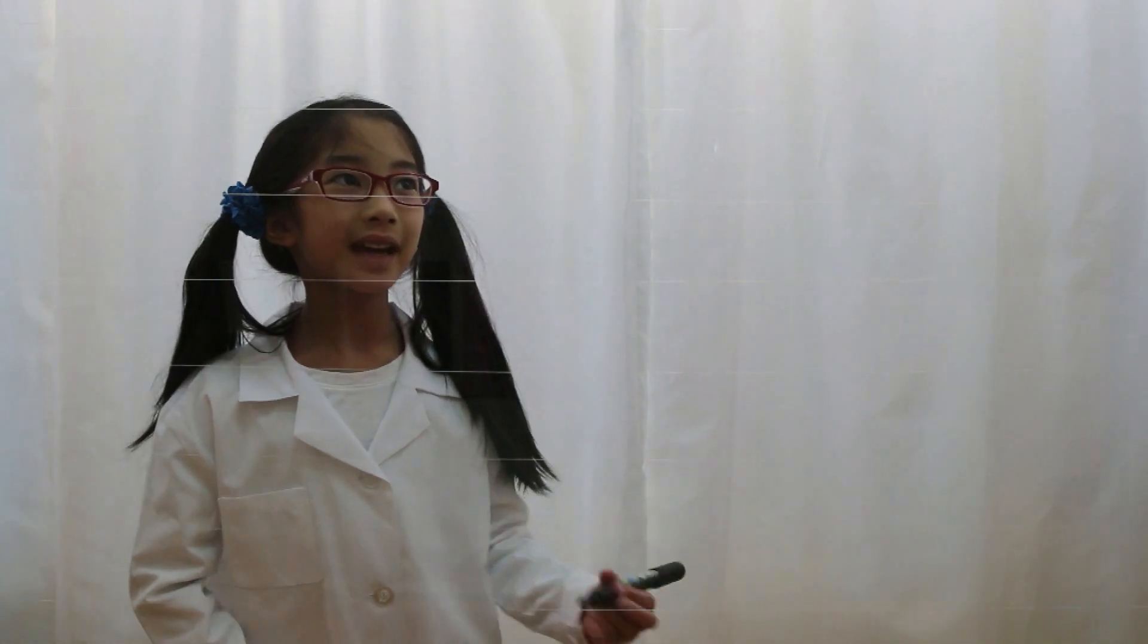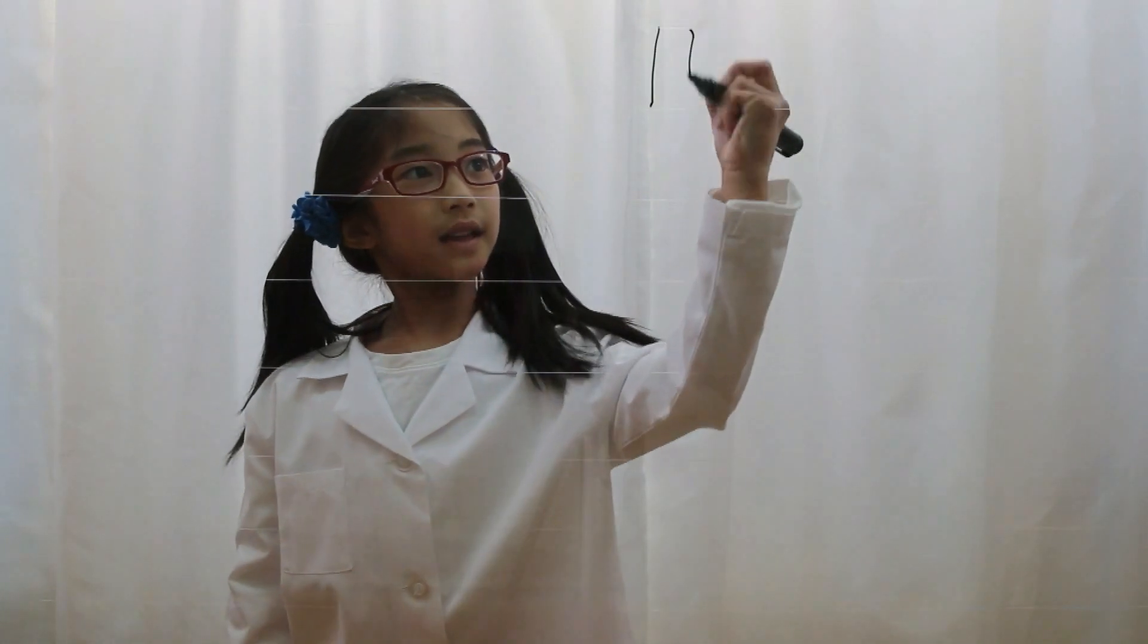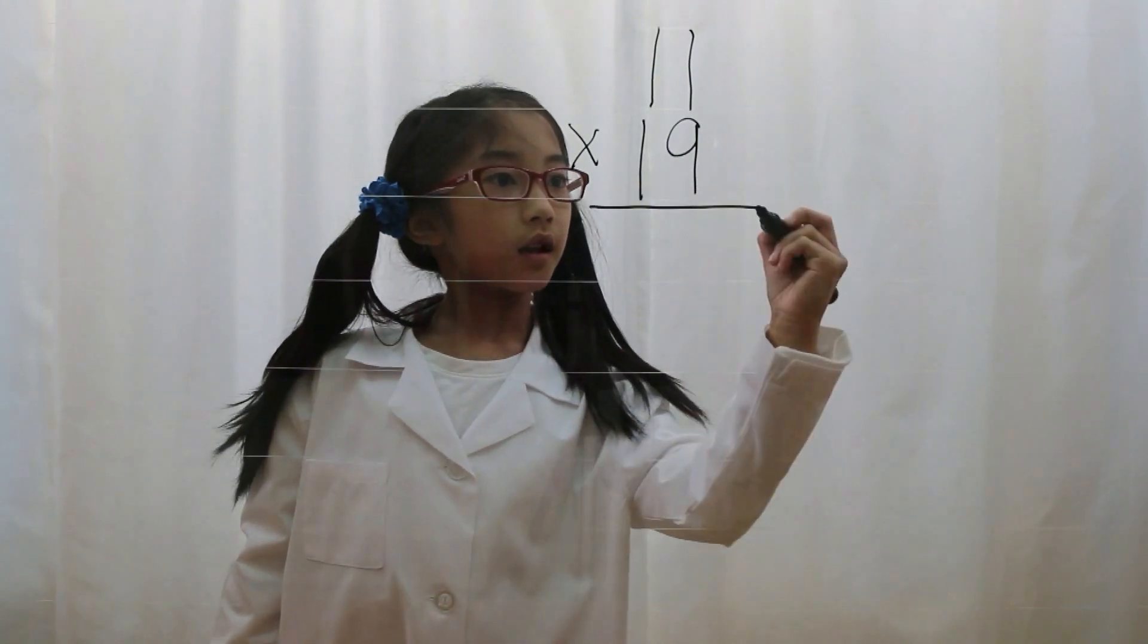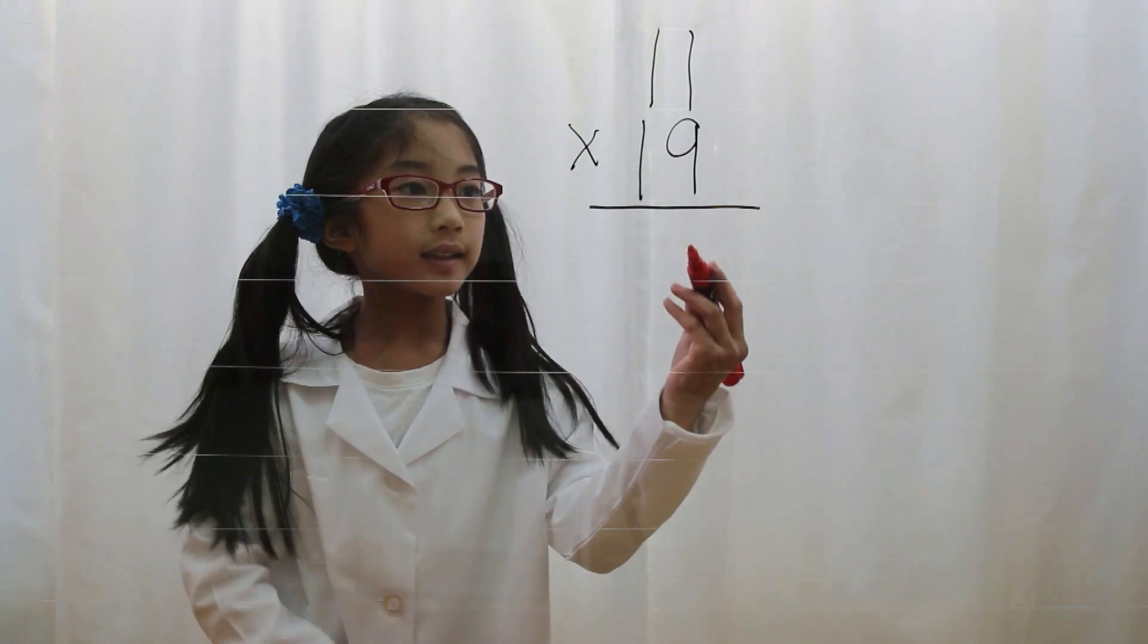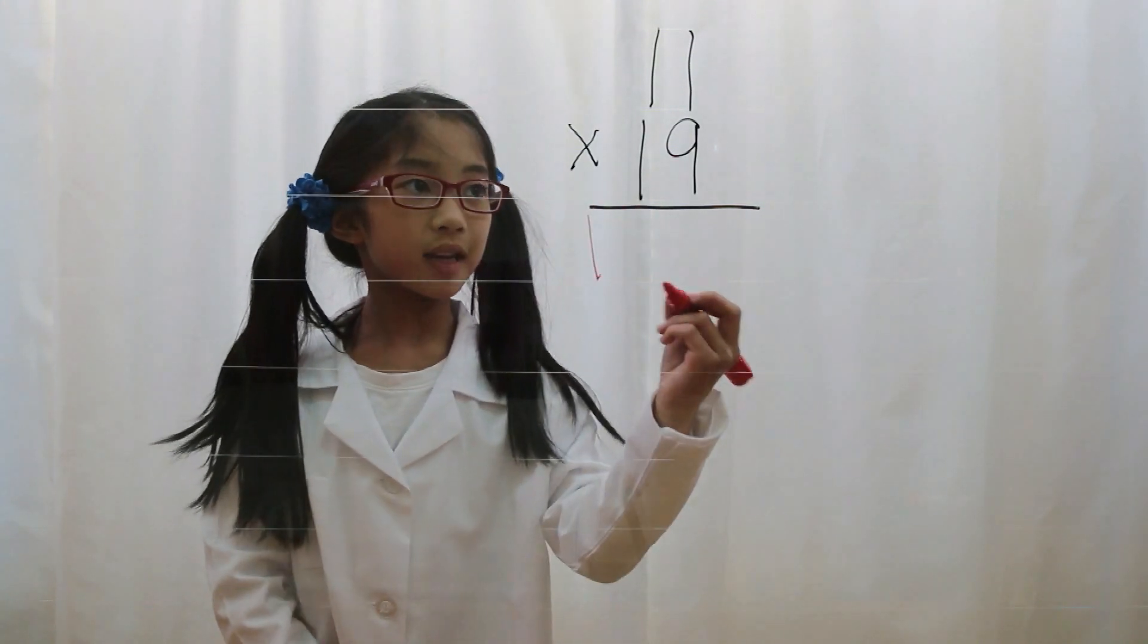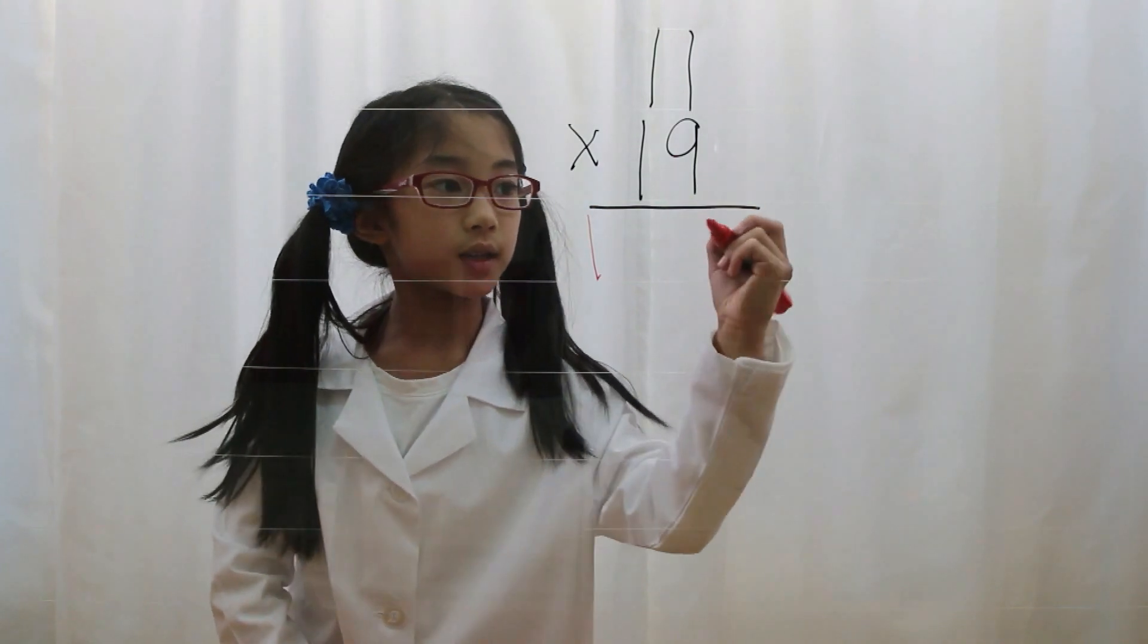Let's try a problem with a carryover. Say you have 11 times 19. First you look at the 19 and put the first digit down, which is 1. Then you skip a space, and put the second digit down, which is 9.